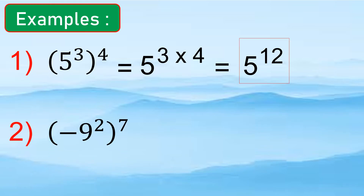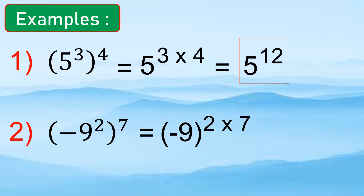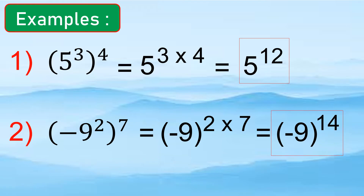Now let us have another example. Negative 9 raised to the 2nd, raised to the 7th — we copy negative 9, then compute 2 times 7, so the answer is negative 9 raised to 14, or negative 9 to the 14th.